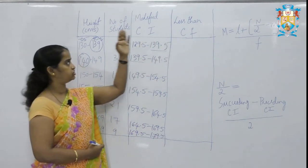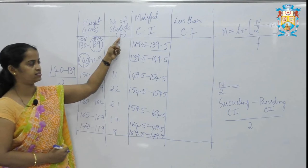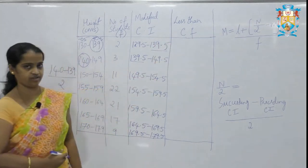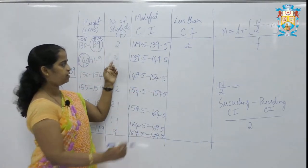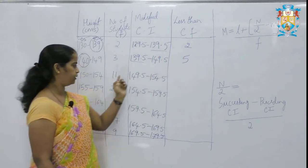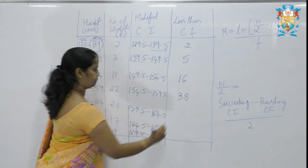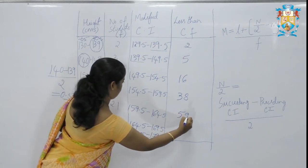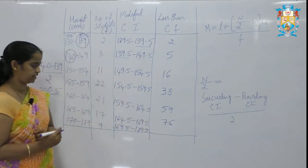Next we need to build the cumulative frequency table. The number of students is taken as the frequency, denoted as small letter f, and converted to less-than cumulative frequency. The first frequency remains the same: 2. Then 2 + 3 = 5; 5 + 11 = 16; 16 + 22 = 38; 38 + 21 = 59; 59 + 17 = 76; 76 + 9 = 85.